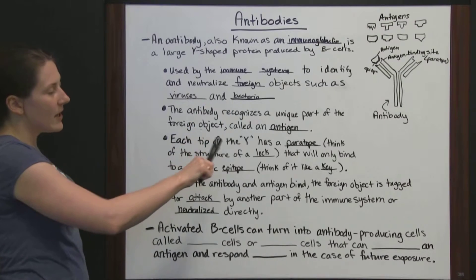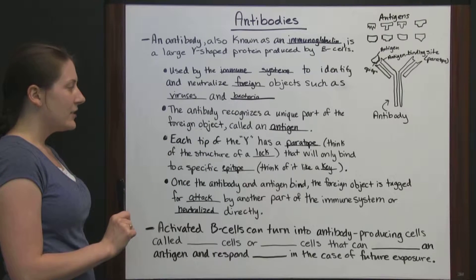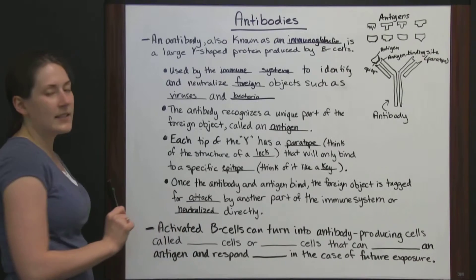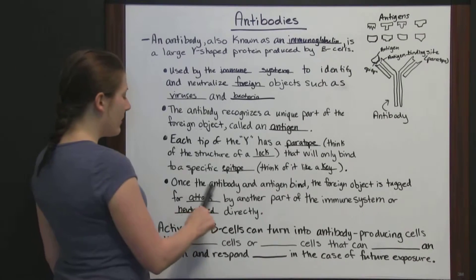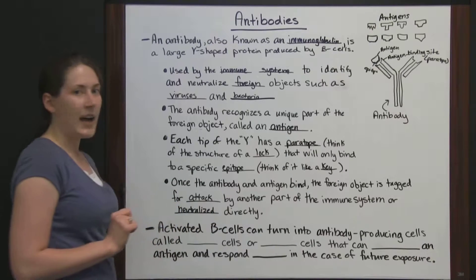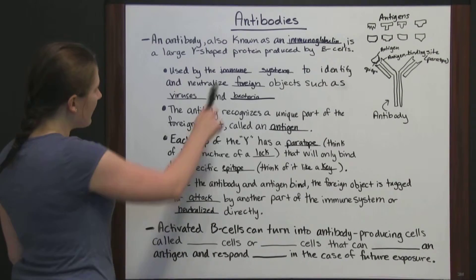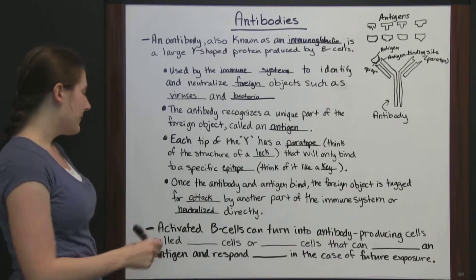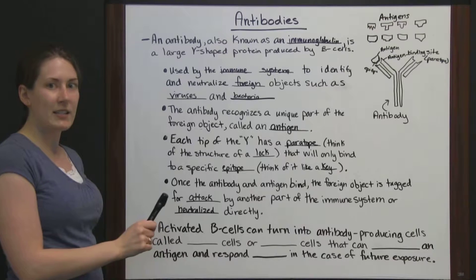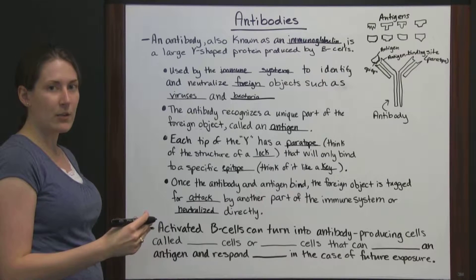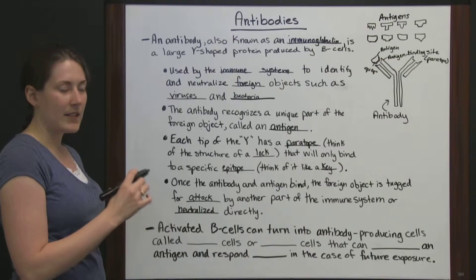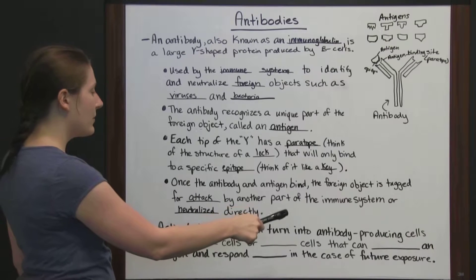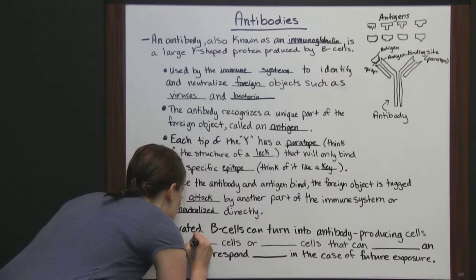Now that you've seen your antibody and seen how it binds to antigens and how it can either neutralize the foreign objects directly or alert the attack for another part of the immune system, let's go back to the B cells. Remember, antibodies are produced by B cells. Once a B cell has been activated, once there's some foreign object in your body that the B cells know about, the B cells can turn into antibody-producing cells called plasma cells to produce new antibodies.